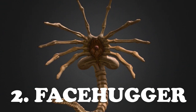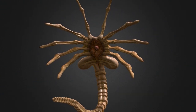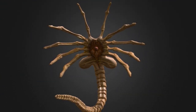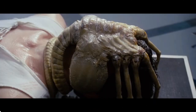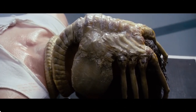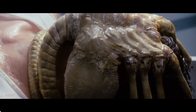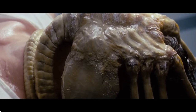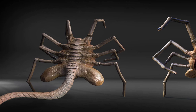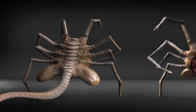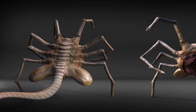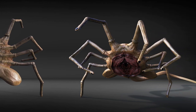Facehugger. From the movie Alien, facehuggers hatch from Alien eggs and are extremely fast and agile. It is a crab-like creature that will latch on to the nearest host. They neutralize the prey by attaching to their head and impregnate them with an embryo that then grows into a chestburster. Once it implants the embryo, it will come off and die.